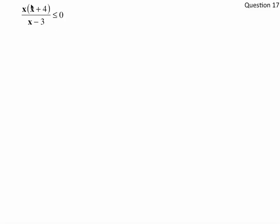Here's question 17. We have x times x plus 4 divided by x minus 3, which is less than or equal to 0. So we have our three terms here, and the first one is just x, which equals 0.